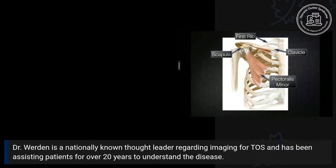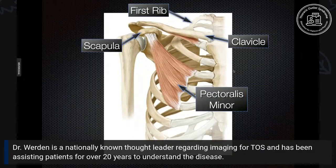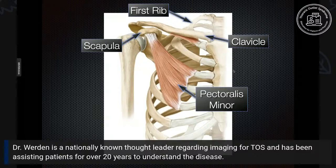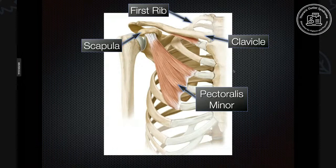The first rib and the collarbone are important to know. The shoulder blade, the scapula, is attached to the collarbone — this is critically important because movement of the shoulder blade directly affects movement of the clavicle or collarbone. The first rib should be viewed as essentially not moving — it's the floor of the thoracic outlet. When the shoulder blade moves, it causes the collarbone to move, getting closer or farther from the first rib, which may compress the important structures of the thoracic outlet. One muscle listed here, the pectoralis minor, attaches the shoulder blade to the front of the chest wall.